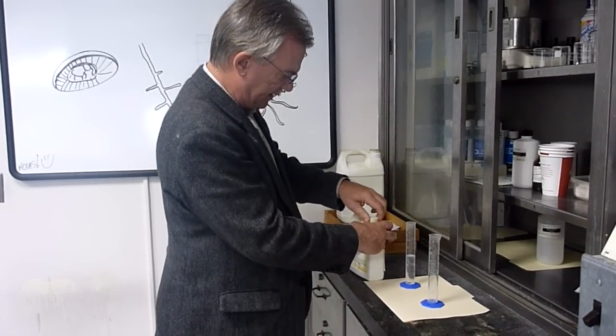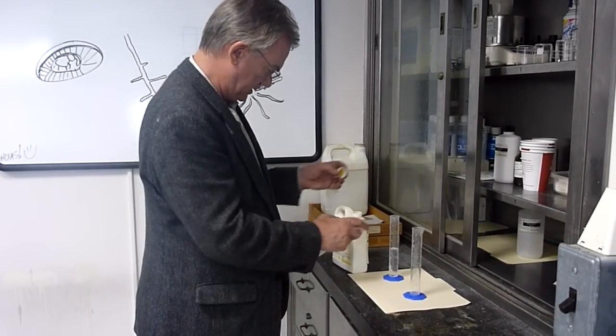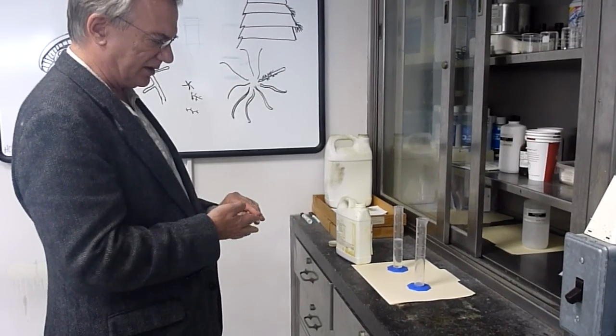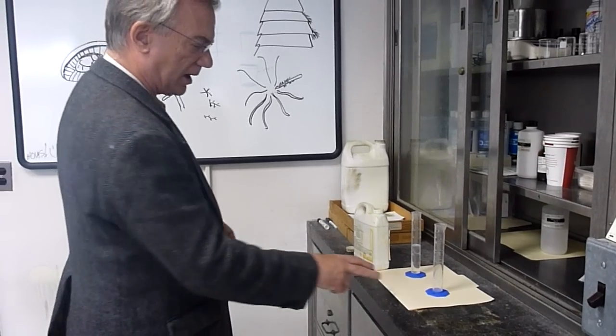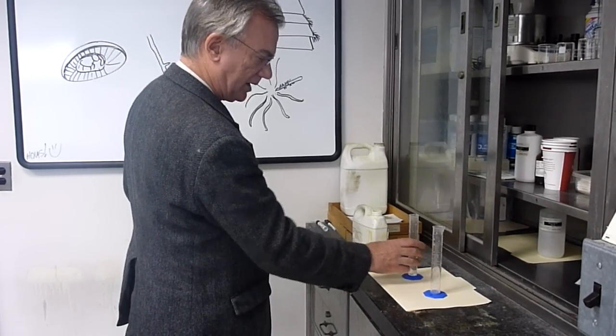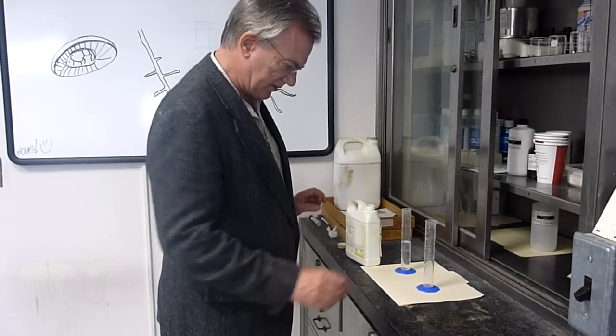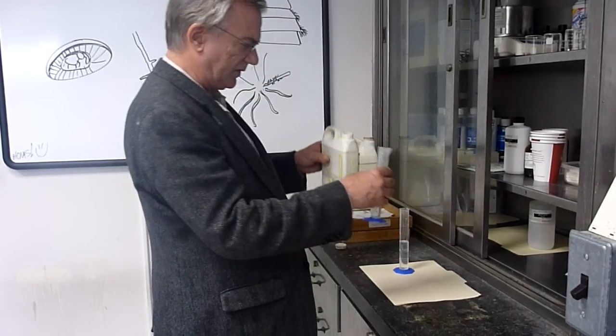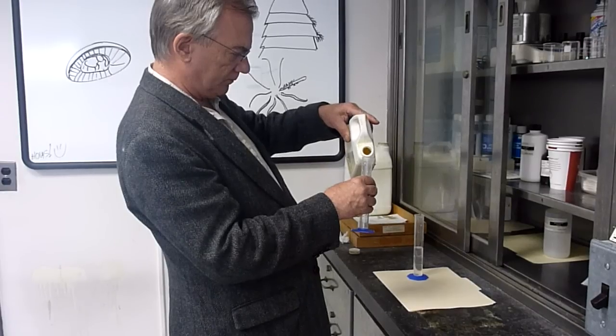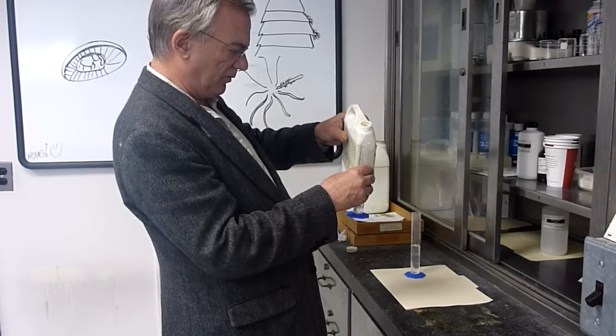And I'm going to put in about seven. Fill the same type of graduated cylinder for the hardener. They're marked, because you don't want to ever mix these up. Fill up to, hopefully, about seven.